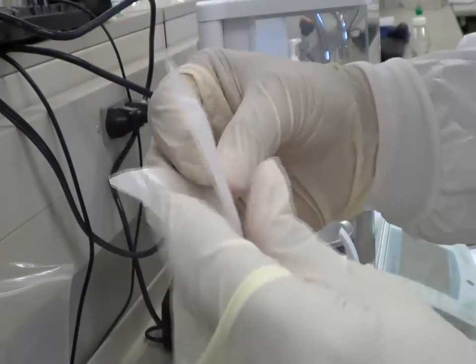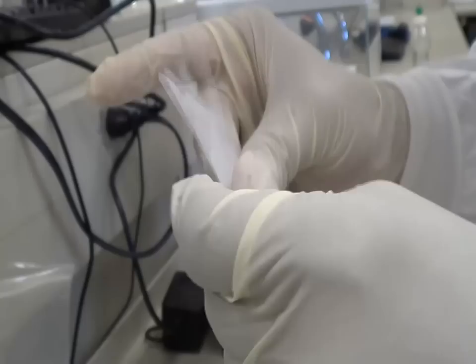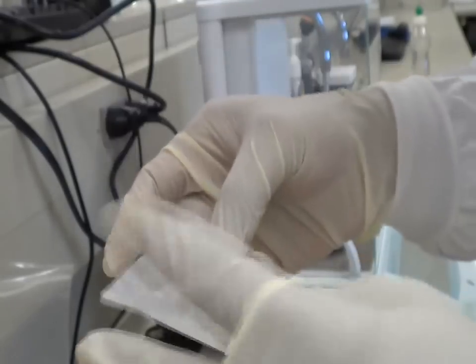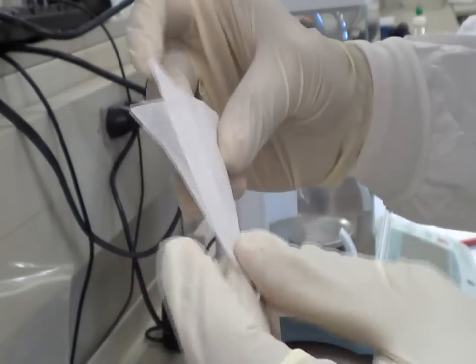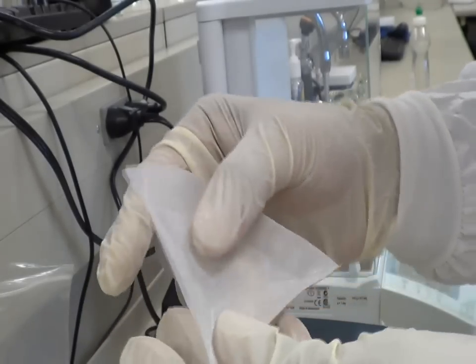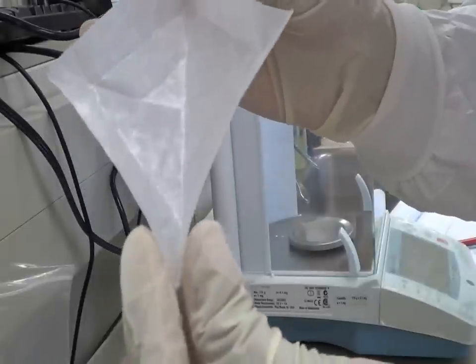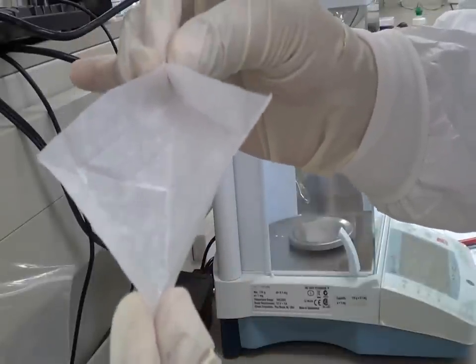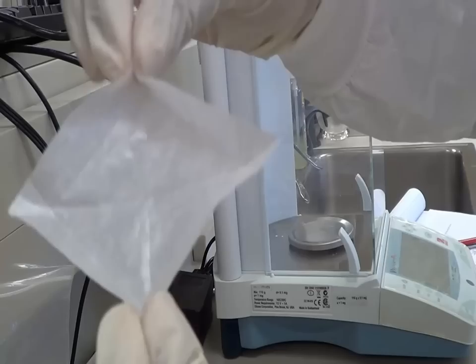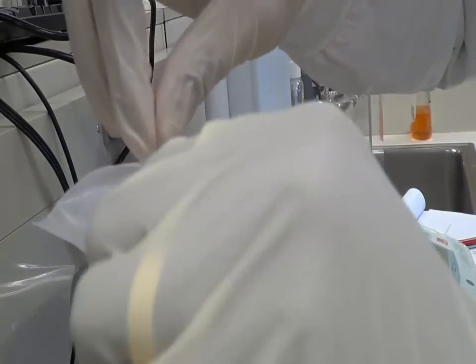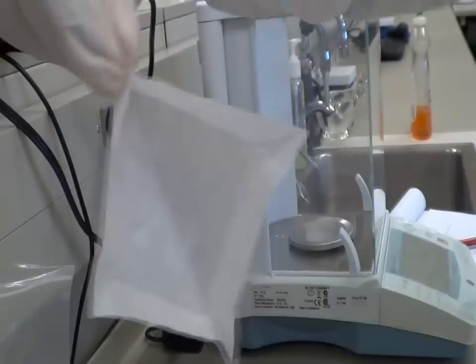Once you fold it in half this way, if you think this is not sufficient, if you want a nice boat, hold the two edges, the two tips, and just slowly tilt it like this.